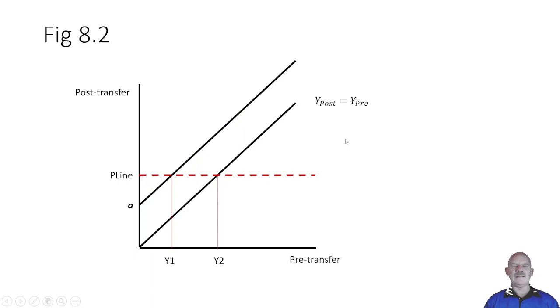So what would a line like this mean? The slope is the same. We've just shifted the curve upwards by amount A. So the curve has an intercept A. It always helps me if I can write down the equation of the line. So Y post is equal to A plus Y pre. If the original line was Y post equals Y pre, now Y post is A plus something.